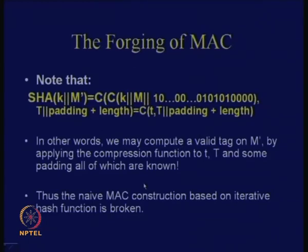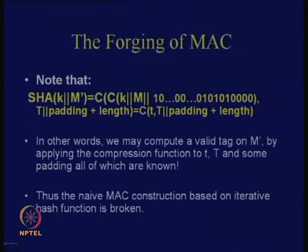Because of this iterated construction, the first application will be c applied over k appended with m, followed by this representation, then again a subsequent application of the c function. This is nothing but c applied over t appended with some padding plus length. On the right-hand side, everything is known because you know what padding is required and you know the length — therefore all the quantities on the right-hand side are known to the attacker. You can actually easily forge the corresponding keyed hash. Such kind of iterated construction cannot be straight away applied to construct the keyed hashed output. You cannot take SHA-1 straight away and make it a MAC.